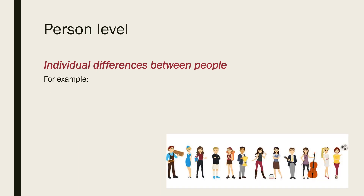The third level of explanation is the person level, which refers to individual differences between people. People have different levels of self-esteem, different levels of motivation, better or worse problem solving skills, and some people are more resilient than others. All of these characteristics fit under the person level.